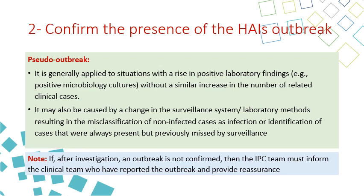A pseudo-outbreak applies to a situation with a rise in positive lab findings — for example, positive microbiology cultures — without a similar increase in the number of related clinical cases. This is caused by a change in the surveillance system or lab methods, resulting in misclassification of non-infected cases as infections, or identification of cases that were always present but previously missed by surveillance. Always note that if after investigations an outbreak is not confirmed, the infection prevention and control team must inform the clinical team who reported the outbreak and provide reassurance.